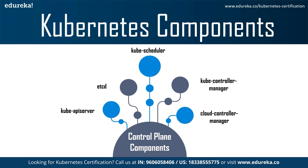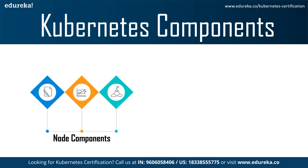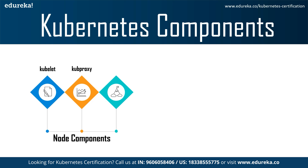Moving on to node components, the first one is kubelet. This is an agent that runs on each node in the cluster and makes sure that containers are running in a pod. The second is kube-proxy, which is a network proxy that runs on each node in your cluster, implementing part of the Kubernetes service concept. It maintains network rules on nodes that allow network communication to your pods from network sessions inside or outside of your cluster.